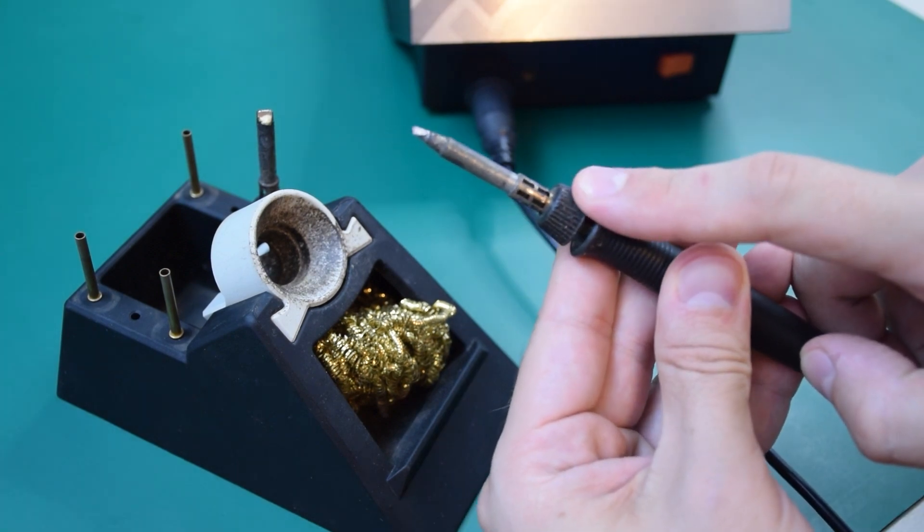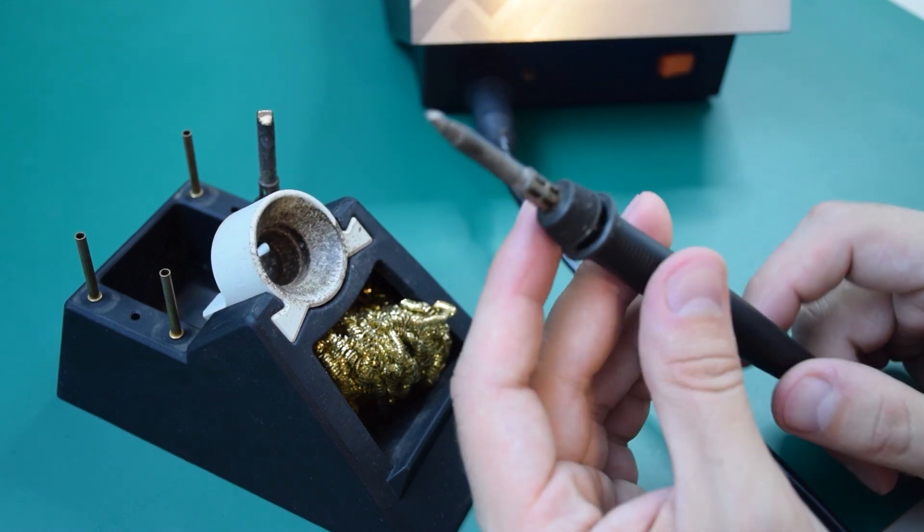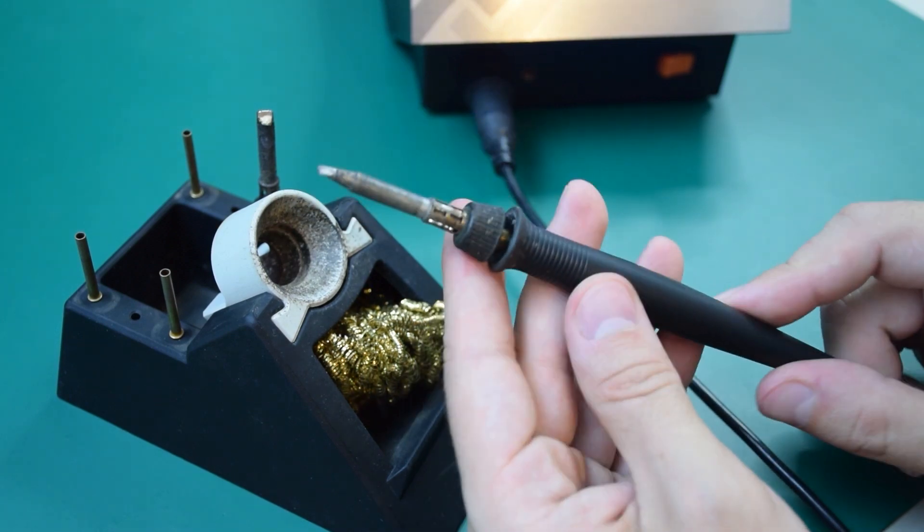The fastener has to be cleaned with IPA, which is isopropyl alcohol, not India pale ale, okay?